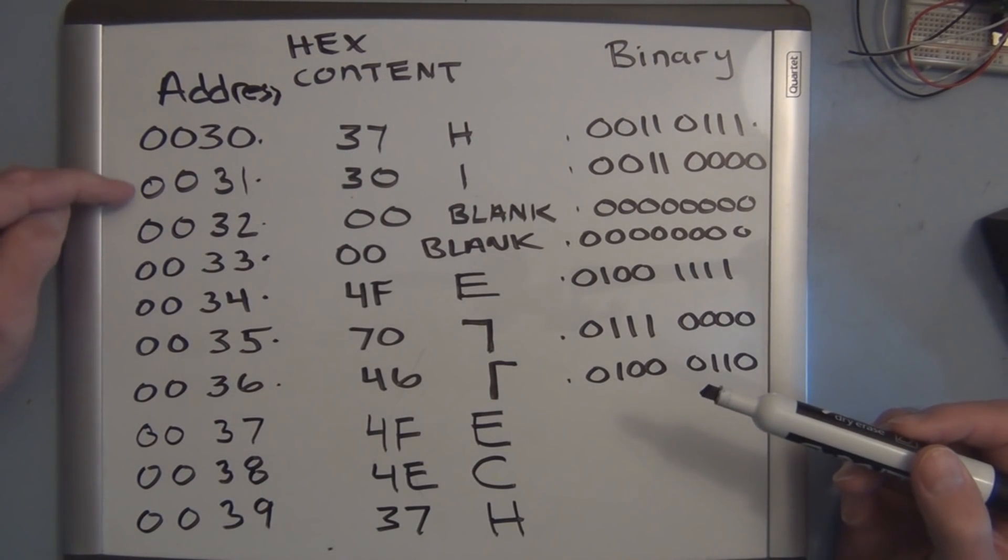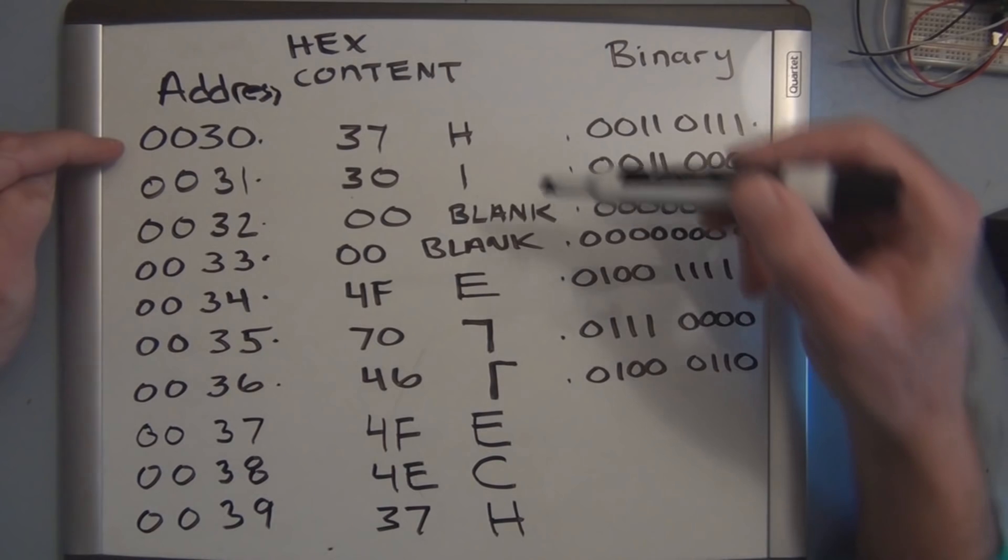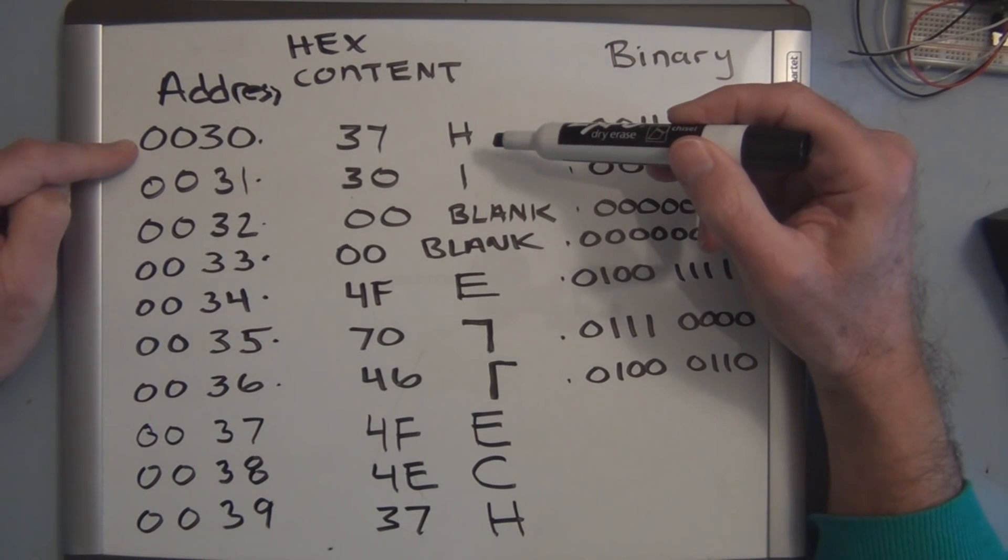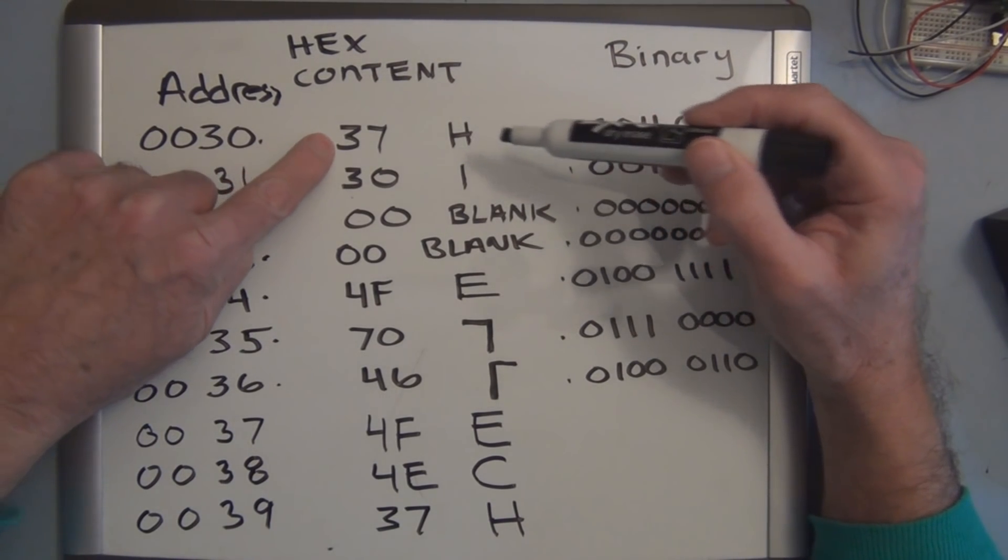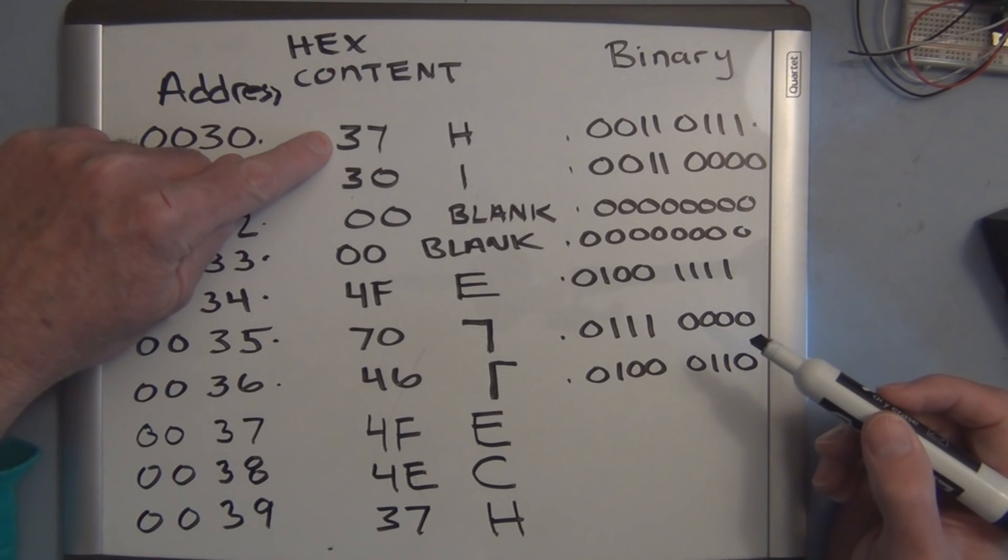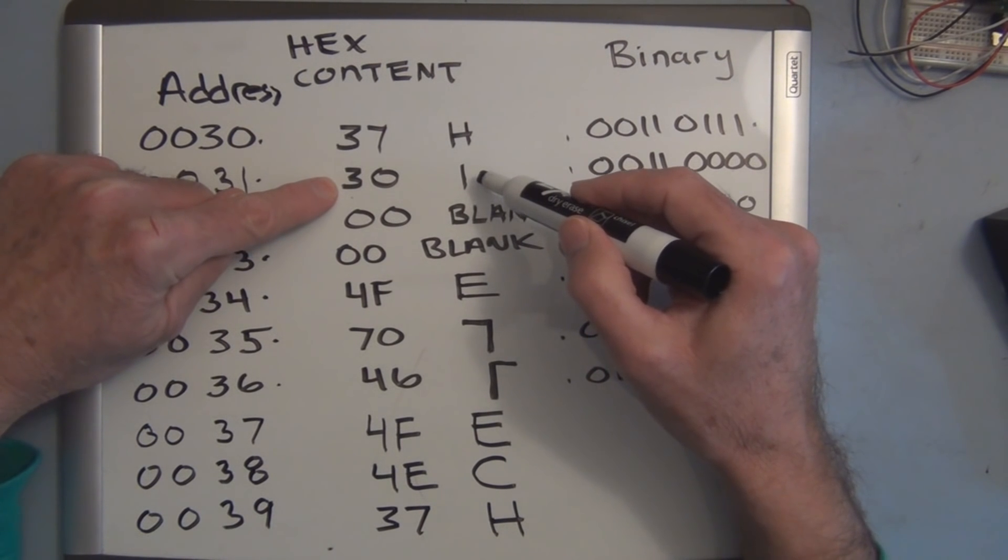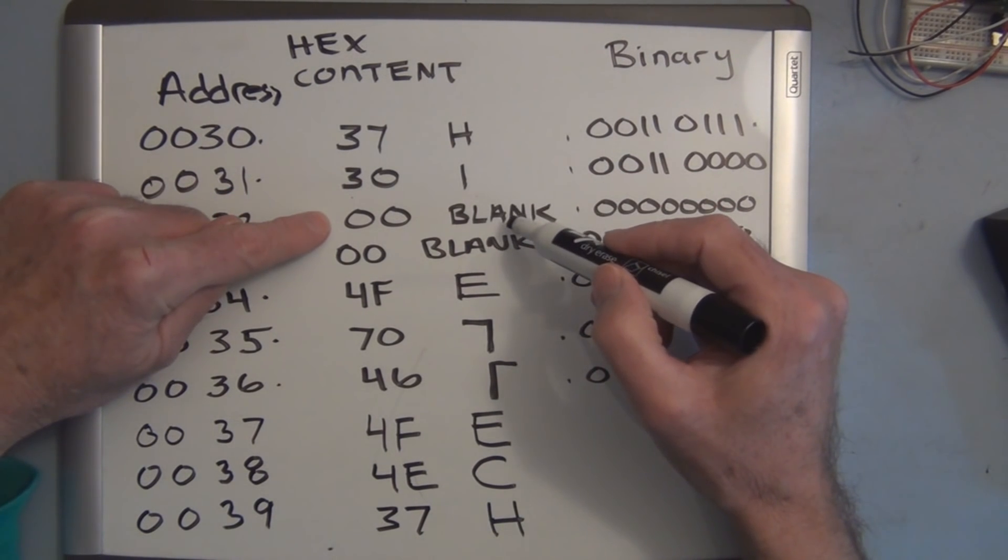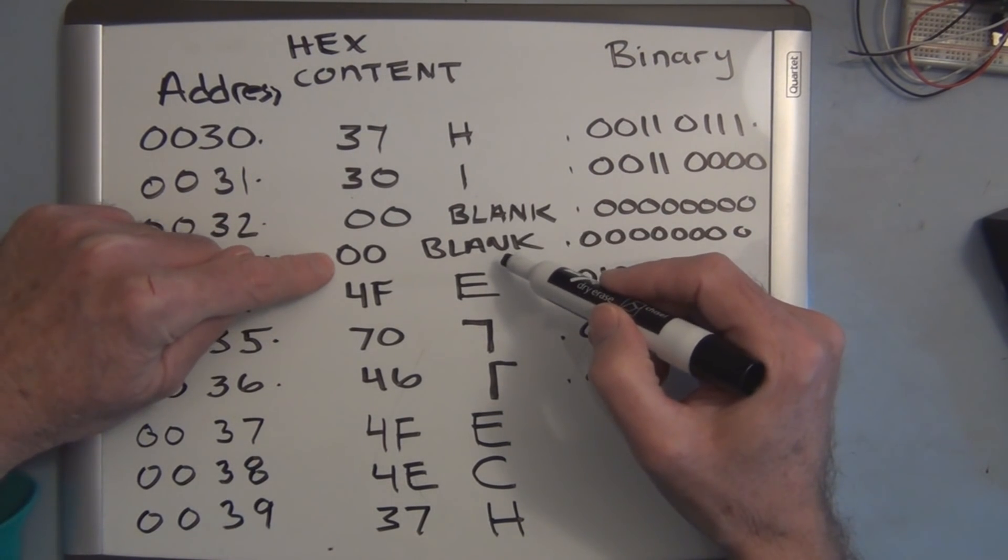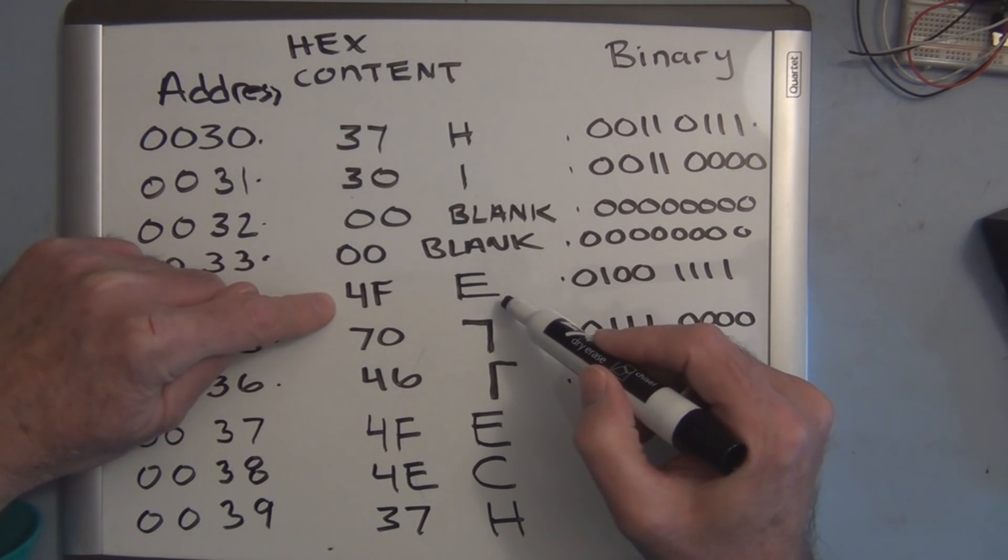And you can see this sequentially one after another. So we have it at address 0030. I enter in the hexadecimal number 37 for the H, 30 for the I, blanks are you enter in 0000, and here's the beginning of E-Tech.